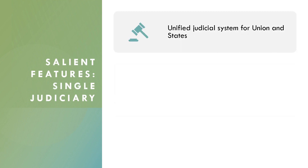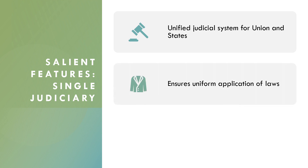The seventh one is single judiciary. India has a unified judicial system ensuring uniform application and interpretation of laws throughout the country. This strengthens the rule of law and prevents legal discrepancies between the states.